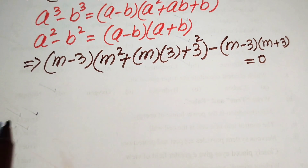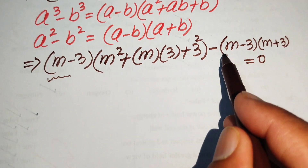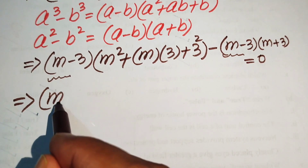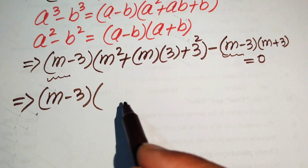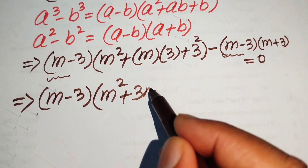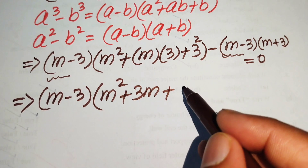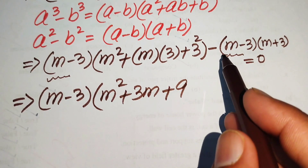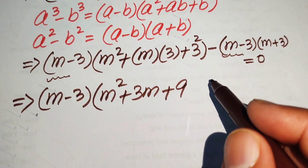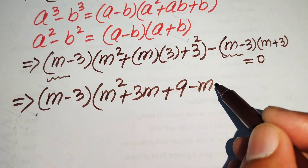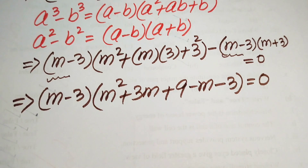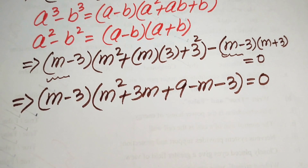We can see that m minus 3 appears as a common term. So we take out the common factor m minus 3, and the remaining terms are m squared plus 3m plus 9, and then multiplying the negative sign gives us minus m minus 3. The whole equation equals 0.